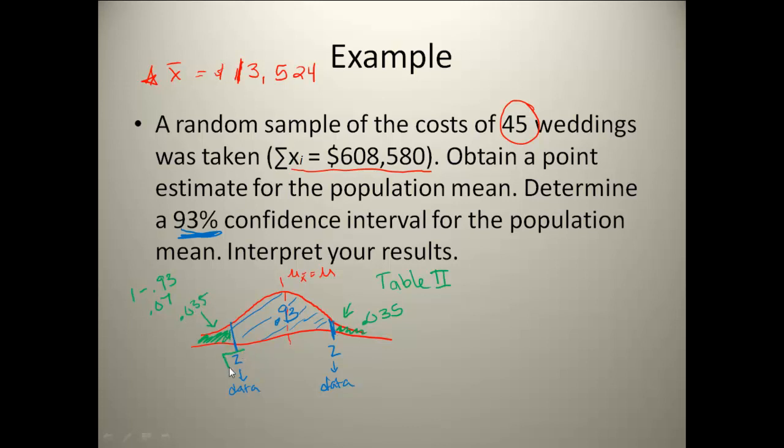So in order to find my bottom z-score here, I need to look for the area of 0.035 in my table 2. You always have to remember to first do your picture in terms of areas to the left.